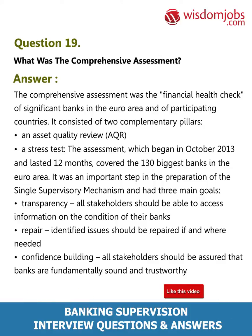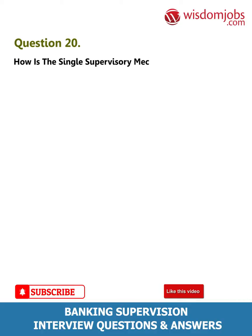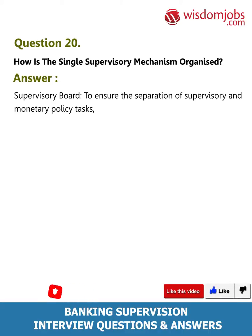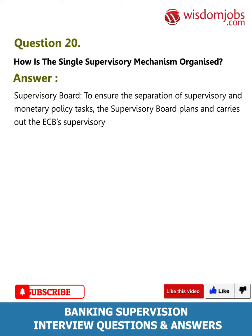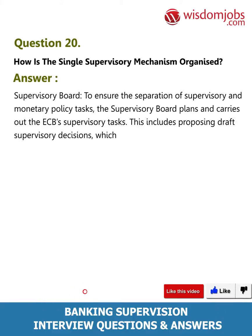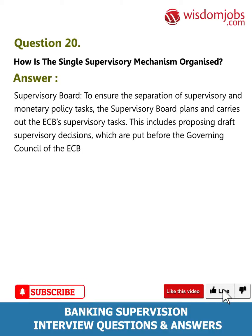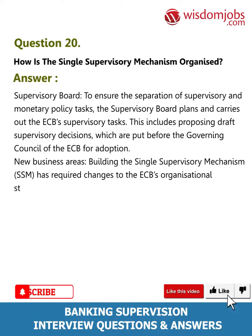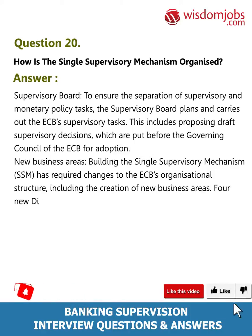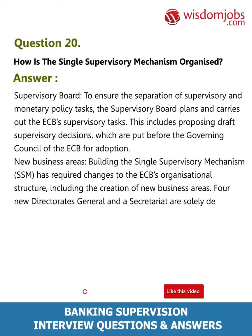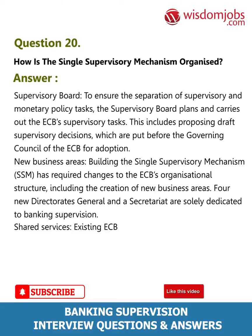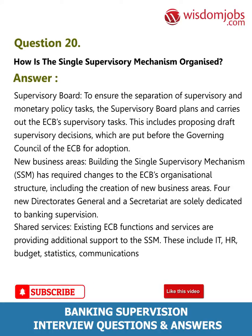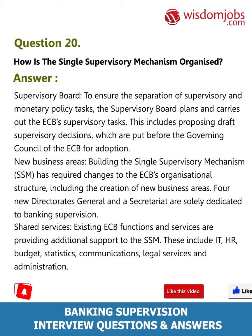Question 20: How is the Single Supervisory Mechanism organized? Answer: A supervisory board plans and carries out the ECB's supervisory tasks, including proposing draft supervisory decisions for adoption by the governing council. Building the SSM required changes to the ECB's organizational structure, including the creation of new business areas — four new directorates general and a secretariat solely dedicated to banking supervision. Shared services including IT, HR, budget, statistics, communications, legal services, and administration provide additional support.